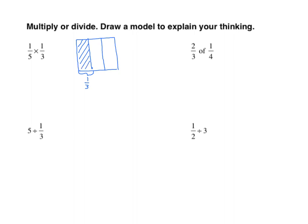Now I'm going to represent the first factor, which is one-fifth, so I've got to partition this into five equal parts. Then I'm going to bracket one of those five parts — I have one-fifth. We'll double-shade this one section. We now have one-fifth times one-third. If we look at that, there are fifteen partitions in all, and one of the fifteen are double-shaded. We get one-fifteenth.